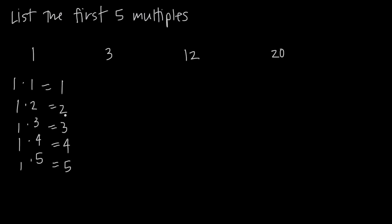Which tells me that 1, 2, 3, 4, and 5 — these results I got here — are multiples of the number 1. And I know that's true because I can divide all of these numbers evenly by 1.